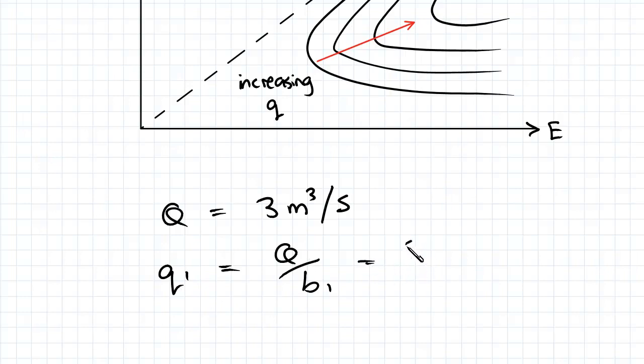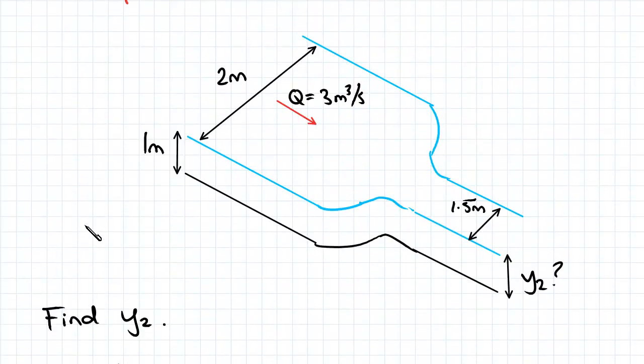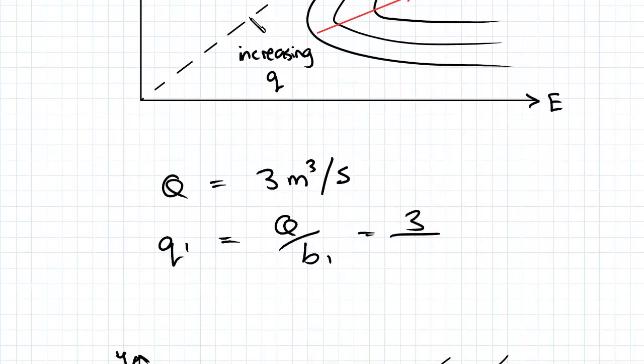So our first width is 2 meters, 2 meter width, and our second width is 1.5, so we are going to get two different values. That will be 1.5 meters cubed per second per meter.